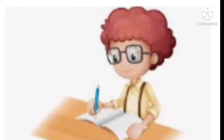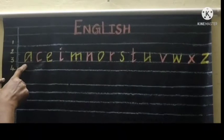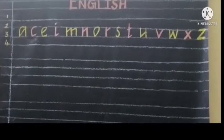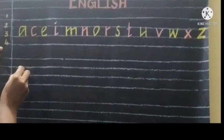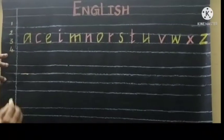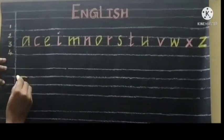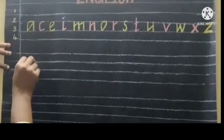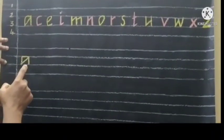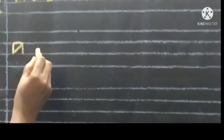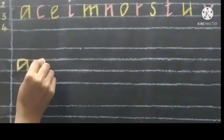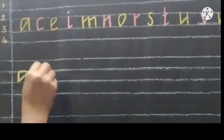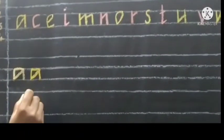Now take your notebook and pencil. Write along with me. First letter is A. How to write letter A? One sleeping line, sleeping line, standing line, cross line and one more standing line makes A. Write once again: draw a sleeping line, sleeping line, standing line, cross line and one more standing line makes A.